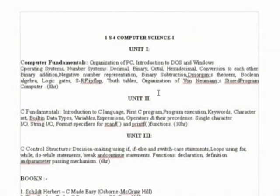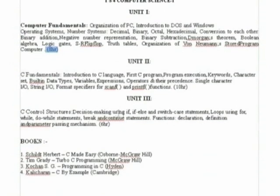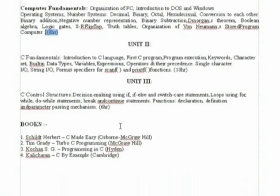We have divided it into three units. The first unit covers the fundamentals about computers, with eight hours duration reserved for that. In unit 2 onwards, we cover C fundamentals. And unit 3 covers control structures and loopings. These are the books that are recommended.